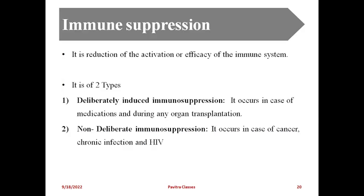Next is immune suppression. Immune suppression is a reduction of the activation or efficacy of the immune system - we are suppressing our immune system's response. Especially in organ transplants, once transplant surgery is done, the transplanted organ is treated as foreign material, so immune suppression medication is given. There are two types: deliberate immune suppression, which occurs during organ transplantation, and non-deliberate immune suppression, which is necessary in cancer, chronic infection, and HIV cases.